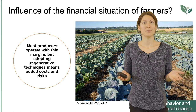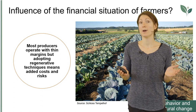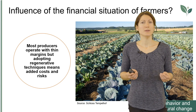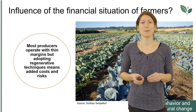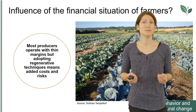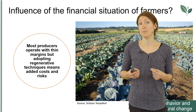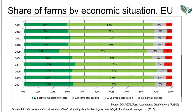Most producers operate with thin margins and have limited financial flexibility, which means that changing established practices initially means more costs and risks. Transition may require adopting diversified operations and piloting new ways of working. There can also be a time lag before farmers reap the rewards — for example from improved soil health, reduced input dependency, or accessing premium organic markets.